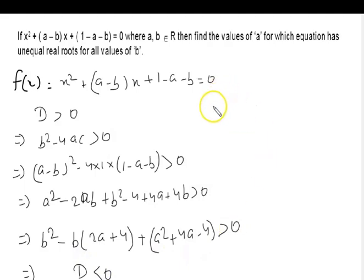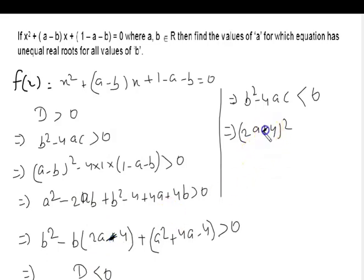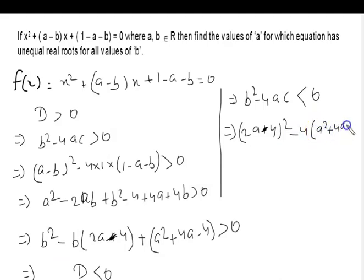For this condition to hold for all values of b, D must be less than 0. So b squared minus 4ac less than 0, where b here is (2a plus 4) whole square, and 4ac equals 4 times 1 times (a squared plus 4a minus 4), which is also less than 0.